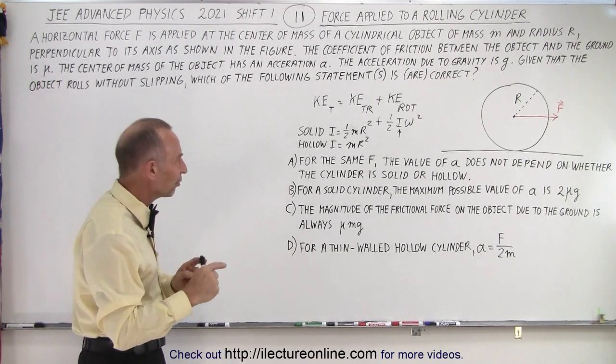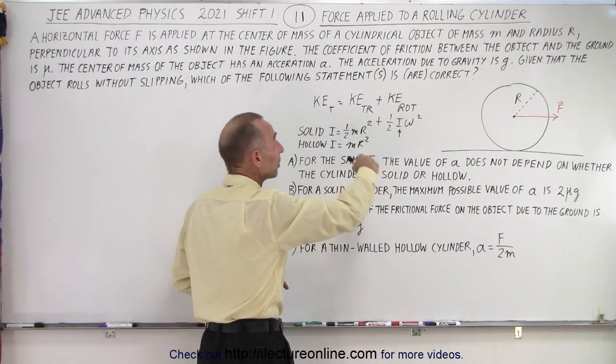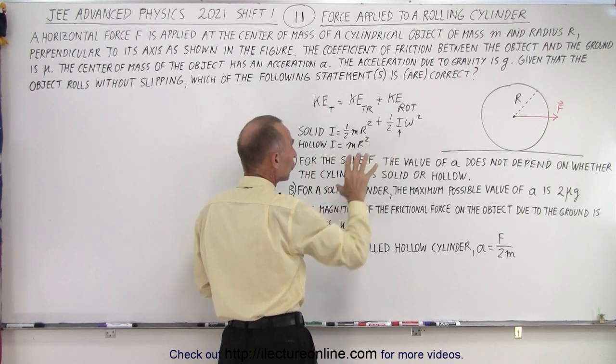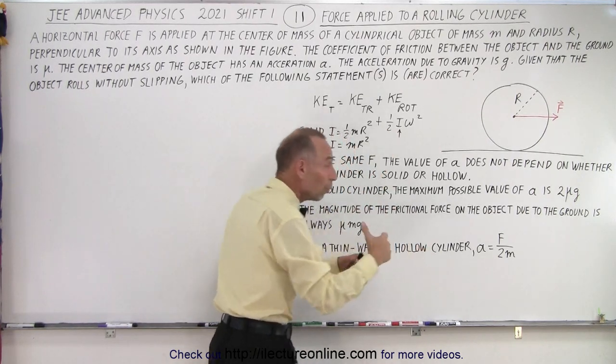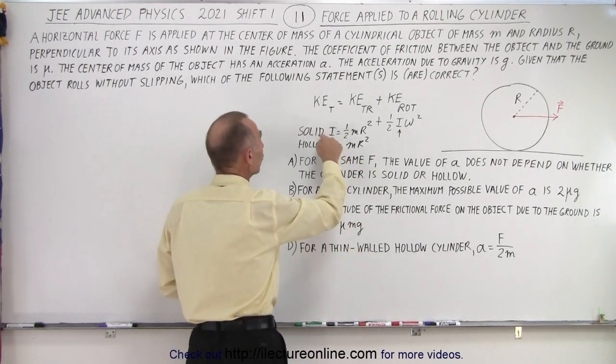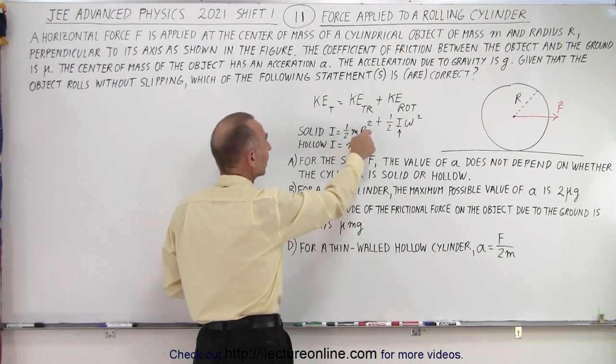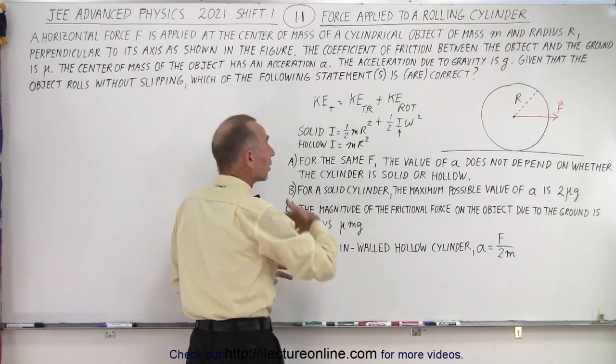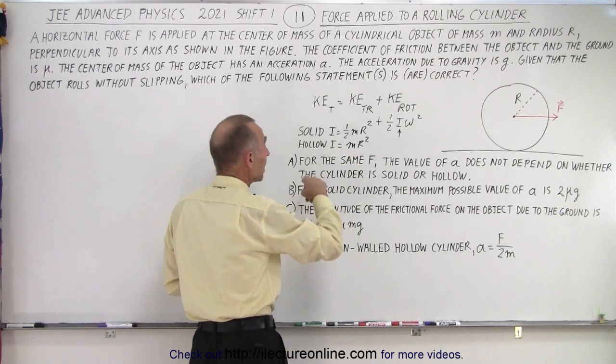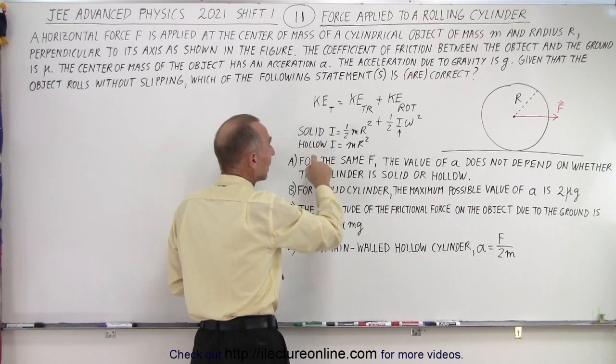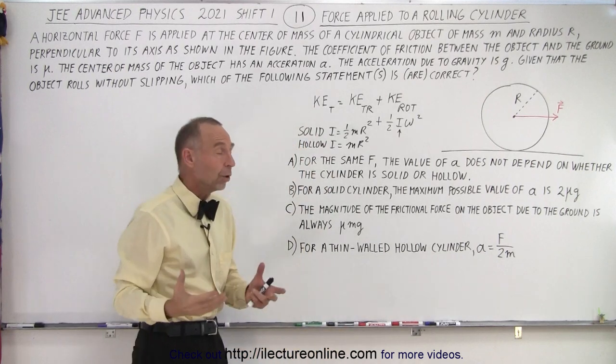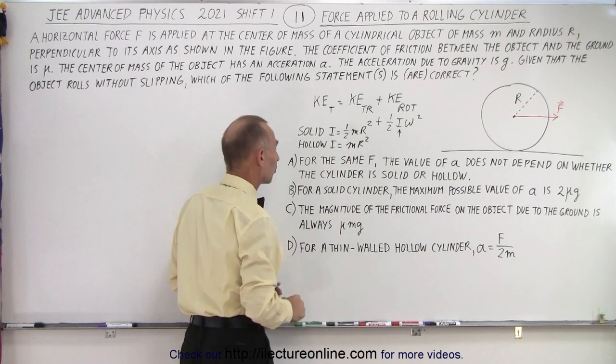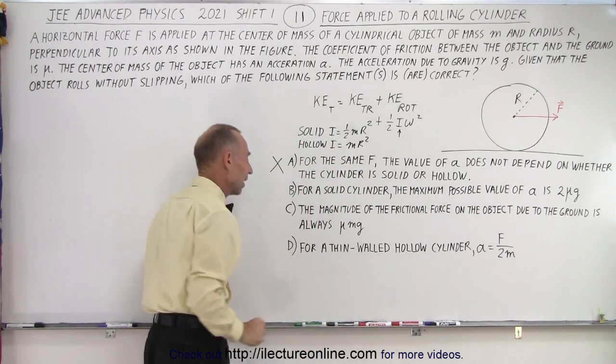So since that is different, for the same force applied, you're going to end up with a different acceleration, because for a hollow cylinder you'll have to put more energy into it, more the force needs to be used to accelerate it, than when it's a solid cylinder because then the moment of inertia is less. So you can see that the acceleration will depend upon whether or not it's hollow or solid. It'll be faster when it's solid, and it won't be quite as fast when it's hollow because it has a larger moment of inertia when it's hollow versus when it's solid. So we can say that A is not a correct answer.